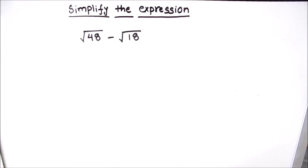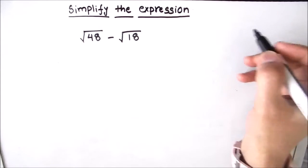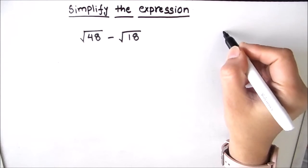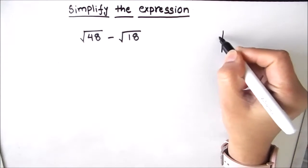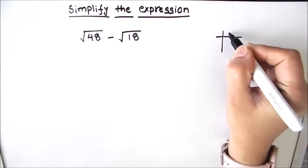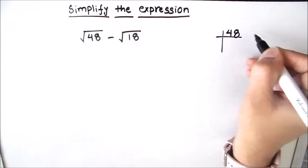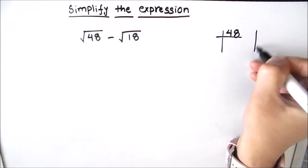Hello students, in this video we are going to simplify the expression √48 minus √18. To simplify such expressions, we are first going to find the square root of both numbers. For finding the square root of the two numbers, we are going to find the prime factors using the prime factorization method.